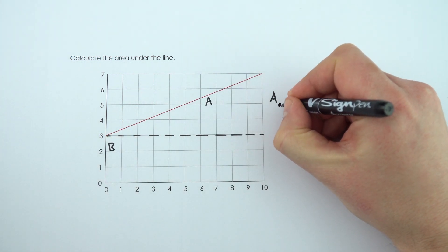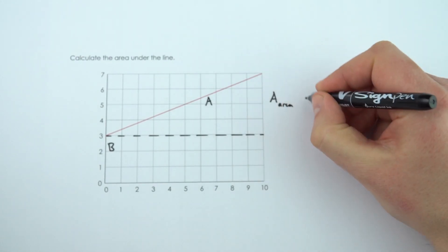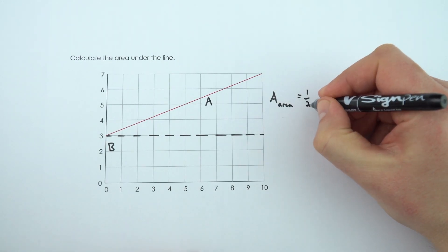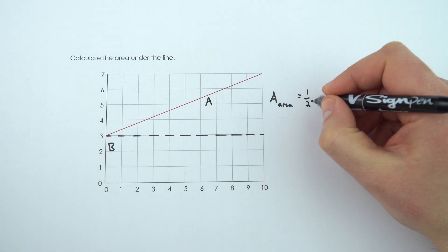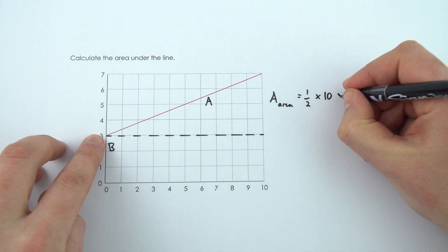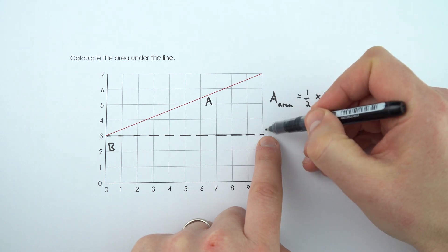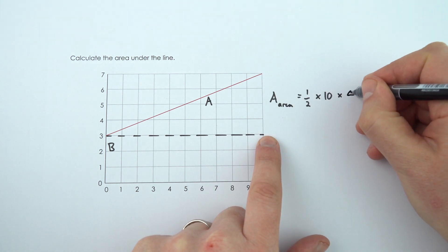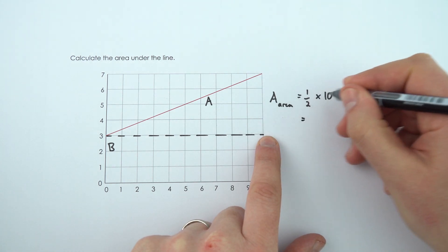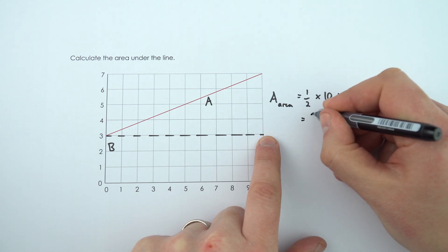To work out the area of area A, that's just going to be equal to a half of the base times the height because it's a triangle. So that's 10. And the height it goes up to 7 but it starts at 3. So the height of this triangle is equal to 4. And therefore that's equal to a half times 40, which is 20.